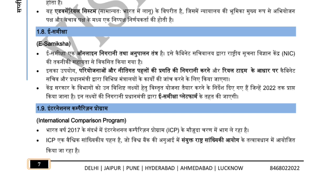The International Comparison Program (ICP) is running currently. ICP is conducted under the aegis of the Statistics Commission. It compares the Gross Domestic Product (GDP) and its components of various countries on the basis of Purchasing Power Parity (PPP). It covers rural and urban areas of the entire country across all states.